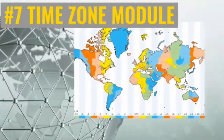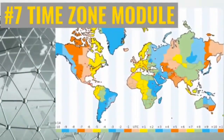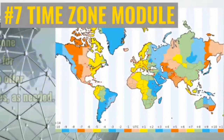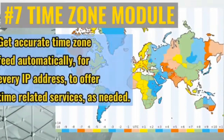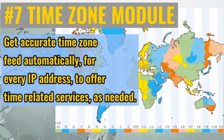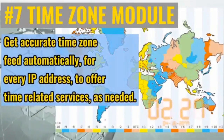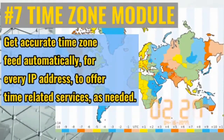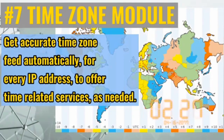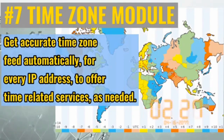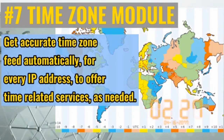Number seven: time zone module — get accurate time zone feed automatically for every IP address to offer time-related services as needed.